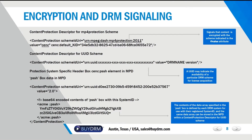Regarding the MPD, it contains the signaling of the content encryption and key management methods used to help the receiving client determine whether it can play back the content. The MPD elements to be used are the content decryption elements, which specify which DRM is used via the proprietary protection system specific header box — whether it's PlayReady, Widevine, or FairPlay — and that's what the player uses to request the license from the license servers.